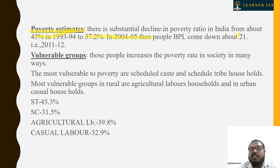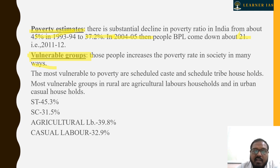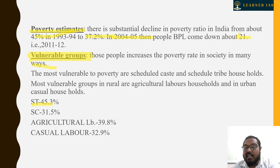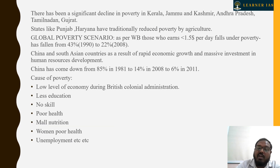Vulnerable groups increase the poverty rate in society in many ways. As per data, 31.5% of people are below the poverty line at agricultural labour level — 39% poor at agricultural casual labour level — 32.9% poor or below poverty line.